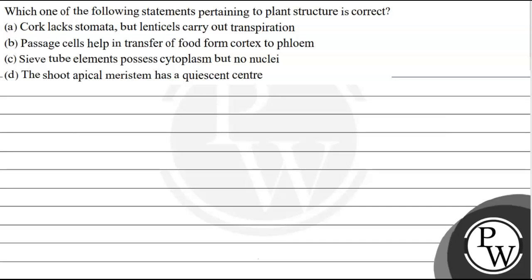Let's look at this question: which one of the following statements pertaining to plant structure is correct? Option A: cork lacks stomata but lenticels carry out transpiration. Option B: passage cells help in transfer of food from cortex to phloem. Option C: sieve tube elements possess cytoplasm but no nuclei. Option D: the shoot apical meristem has a quiescent center.